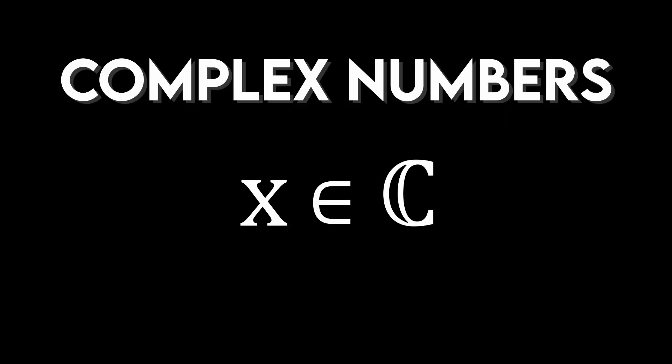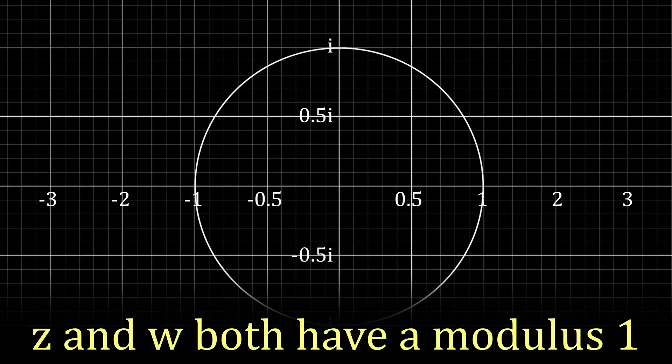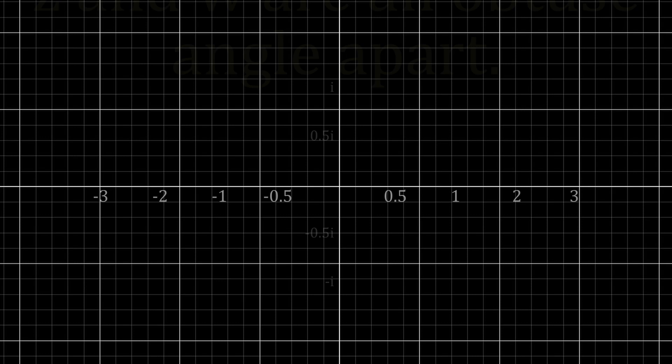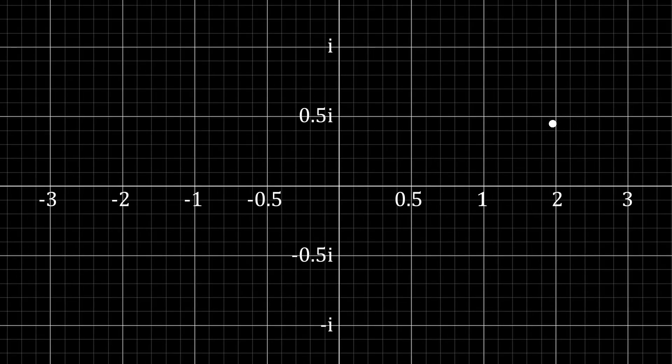We're essentially taking two complex numbers, z and w, both of which are located somewhere on the unit circle. This statement here means that the angle difference between z and w is obtuse. Just for a visual representation, let's plot two points on the unit circle and obtuse angle apart.